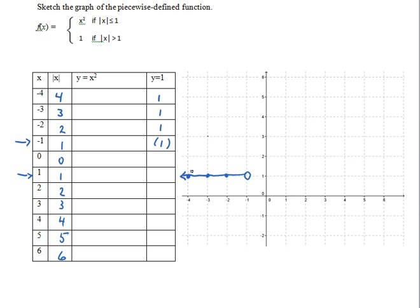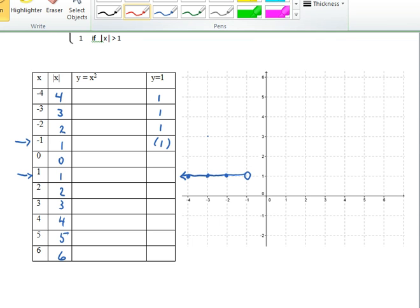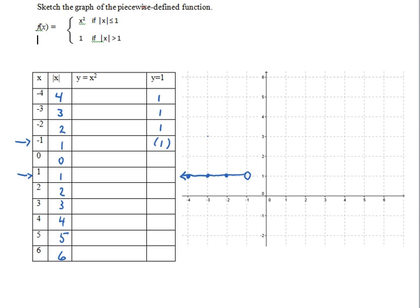Now for the values of x negative 1, 0, and 1, we're going to use the first definition. And so when I do that, I get 1 squared which is 1, 0 squared which is 0, and 1 squared which is 1.